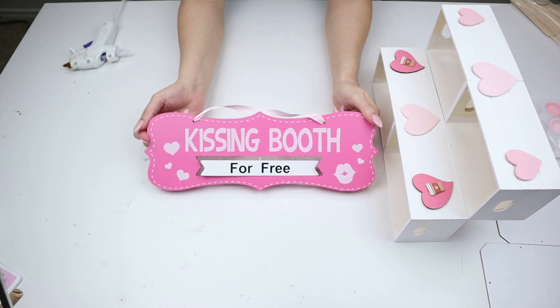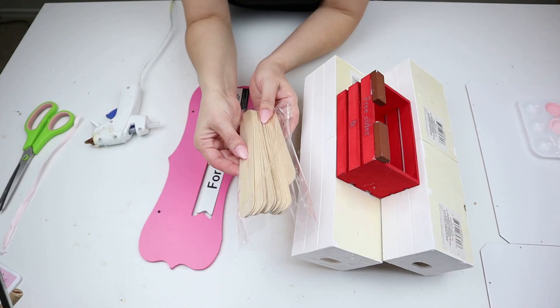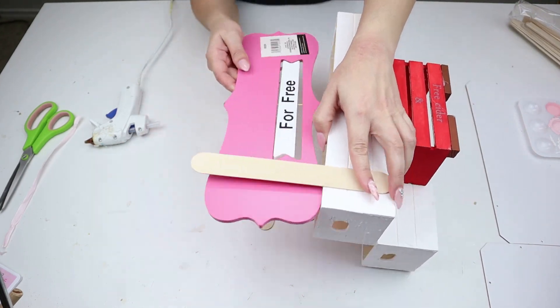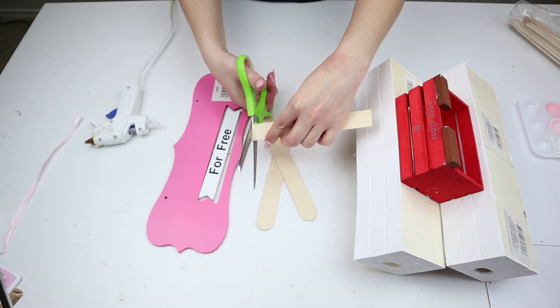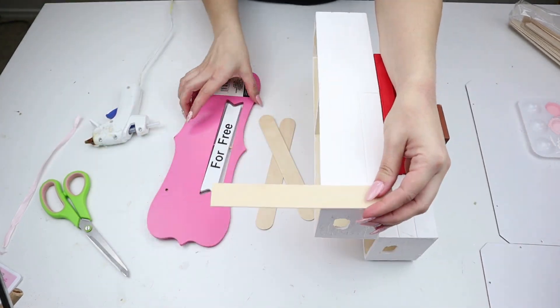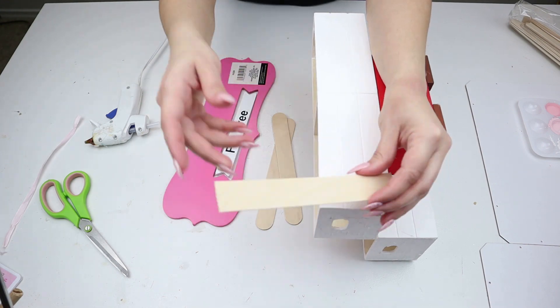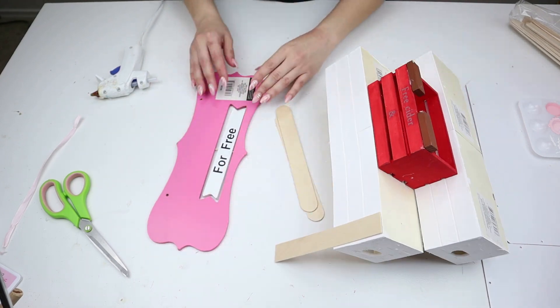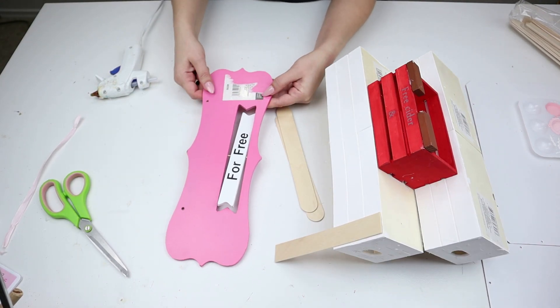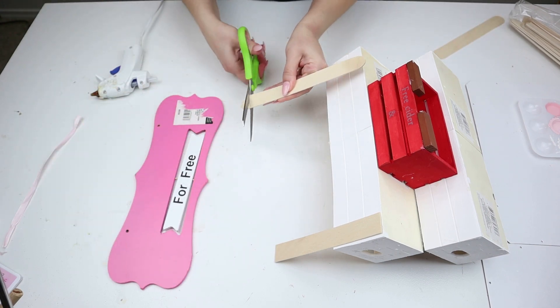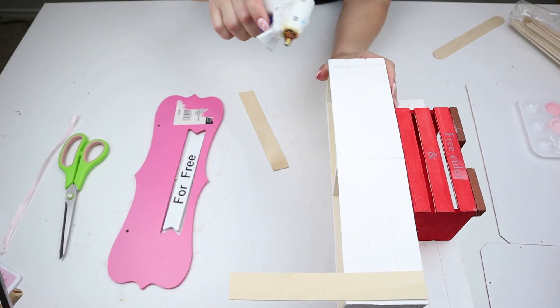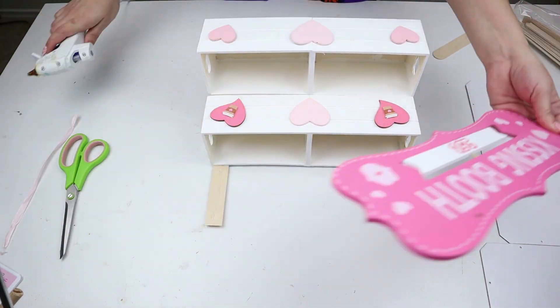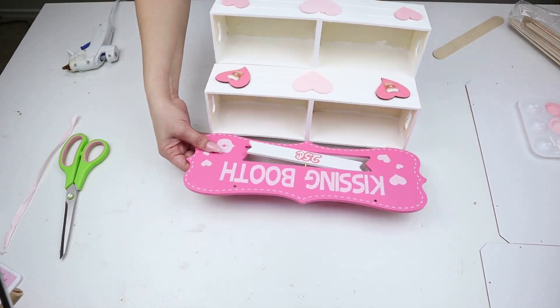This is the sign I found at Dollar Tree that I'm going to be using to attach to the crates. I'm just going to use these jumbo popsicle sticks from Walmart to attach them. When Chic on the Cheap made hers, she made it where you can see the popsicle sticks sticking out so it looked more like a kissing booth or any type of booth you see at a fair. I didn't want mine to look like that. I wanted my sign to look like it was sitting on the top row of crates, so I made it where you can't see my popsicle sticks. If you see her video, you can see how she did it and how mine turns out, and then you can determine how you want yours.